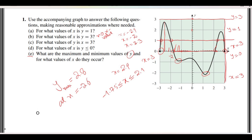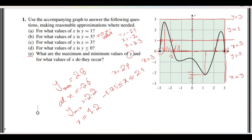So minus 2, minus 2.2, minus 2.4, and minus 2.6. The next one is the minimum value. We have local minima here and here, but the smallest value overall is this one. We draw a straight line across to the y-axis: that is minus 2, minus 2.2, minus 2.4 — so y minimum is approximately minus 2.4. And this minimum occurs at x = 1.2. Thank you.